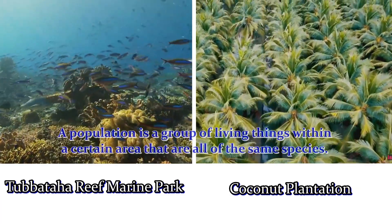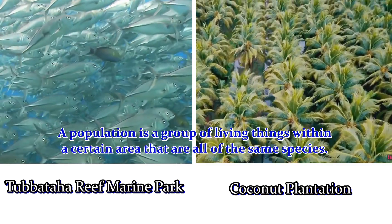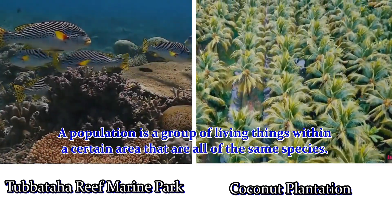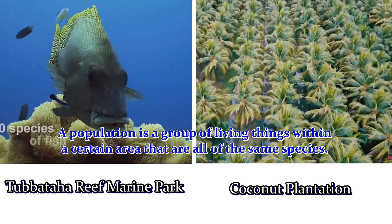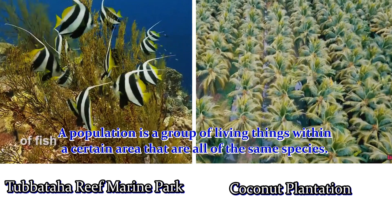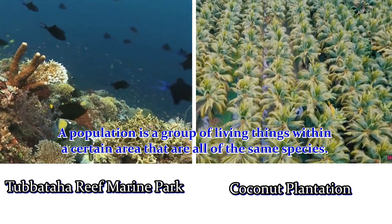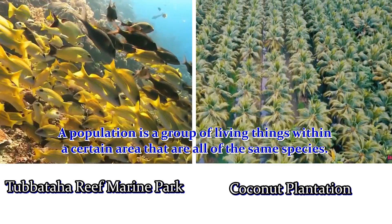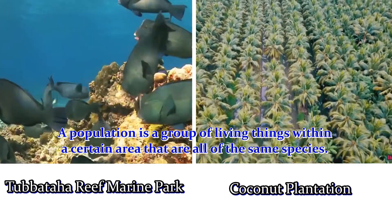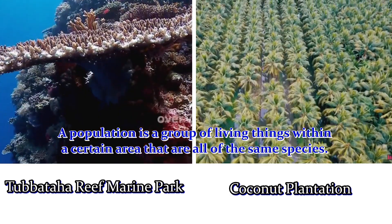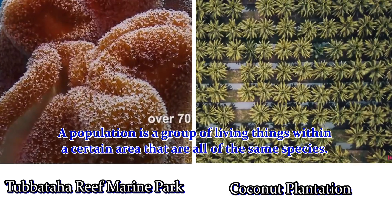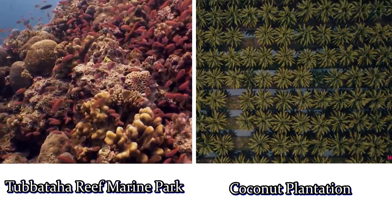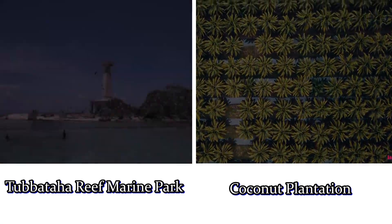A population is a group of living things within a certain area that are all of the same species. Several different populations may be found in a community, and a population of one kind may affect a population of another kind within the community. A jungle has a greater amount of biological diversity.